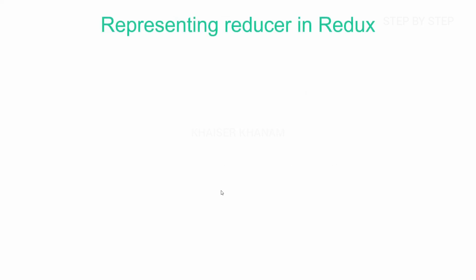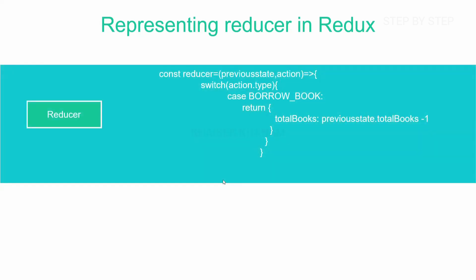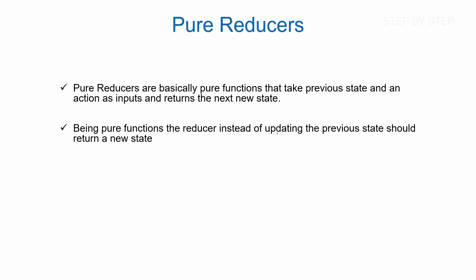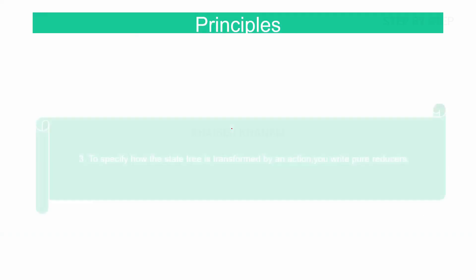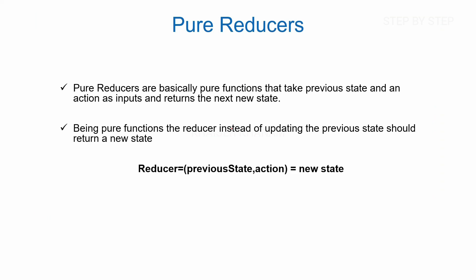How do we represent a reducer in Redux? We create one function using a fat arrow function. We pass two arguments: previous state and action. Inside the function, we use a switch statement, and inside the switch, we give action.type. In actions, we have a type property, and to access any property in an object, we use the dot operator, so we use action.type.